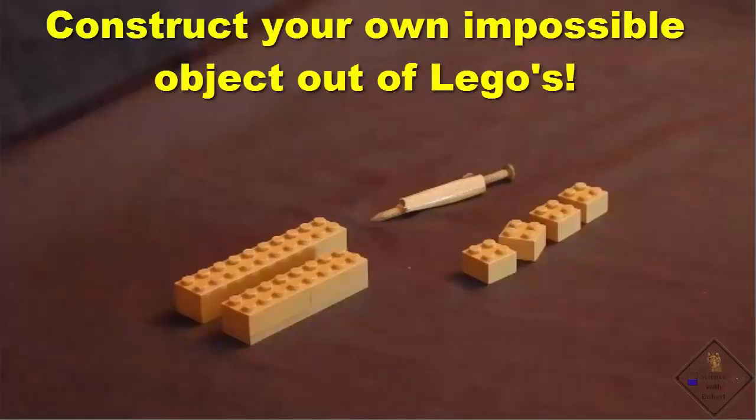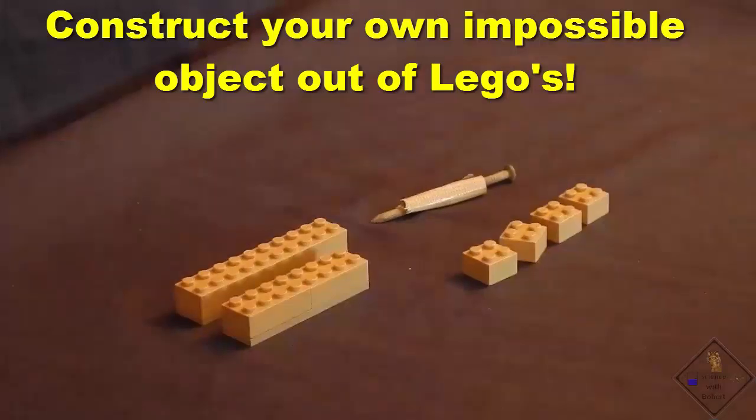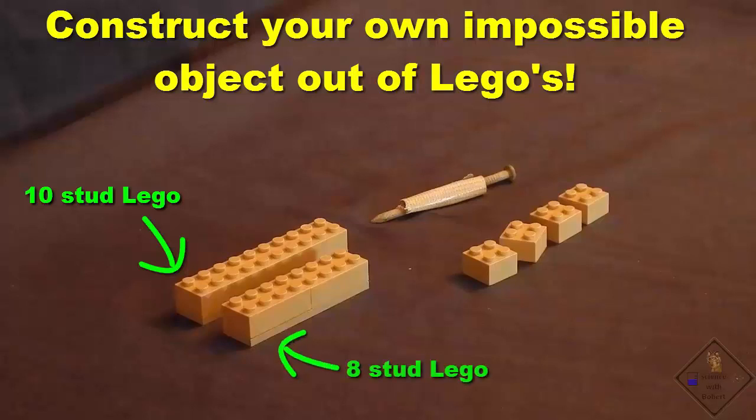Do you have any Legos laying around? If so, go get them because Dr. Smith is going to build a Penrose Triangle, which is an impossible object and he is going to use Legos. First, you will need a ten stud and an eight stud Lego, four two stud Legos and some tape and some sort of weight so your Penrose Triangle will not fall over when completed.